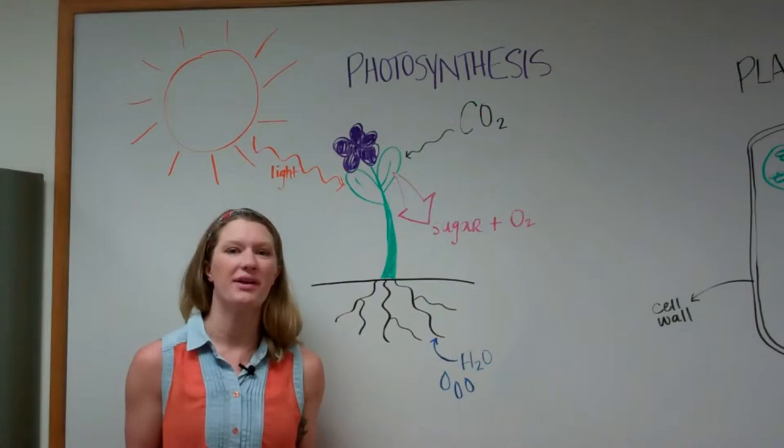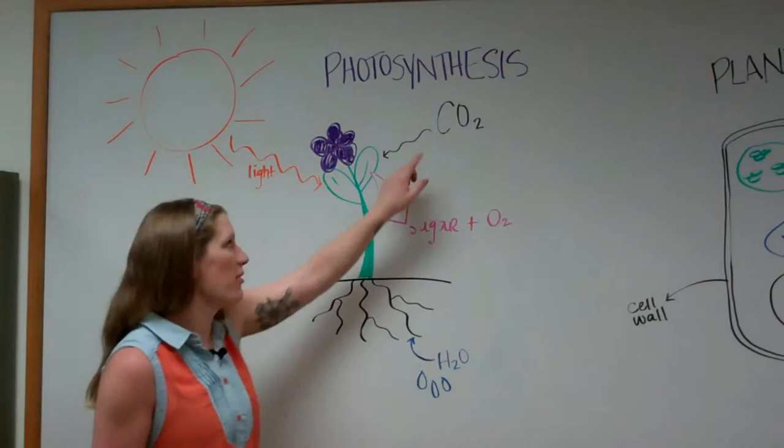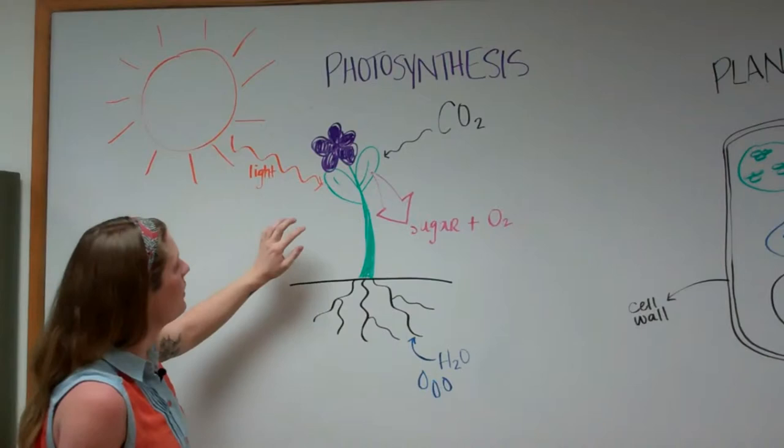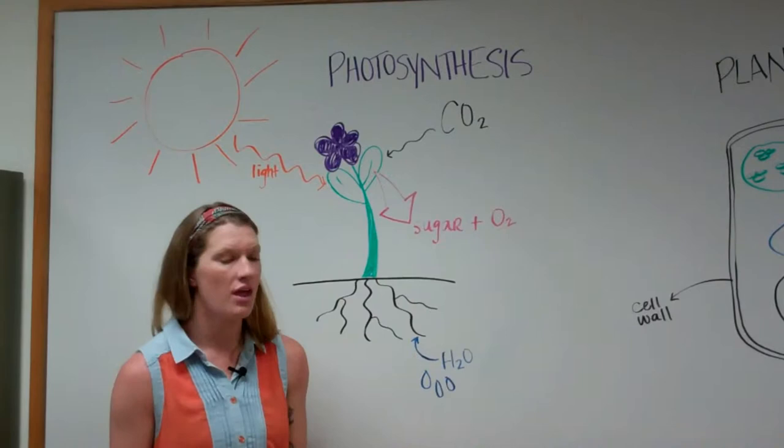And the craziest thing about plants? They can make their own food. By combining water from the roots, carbon dioxide from the air, and using energy that is stored in sunlight, plants can create sugars and release oxygen in a process called photosynthesis.